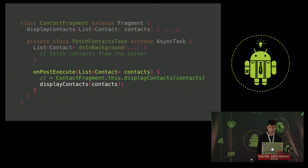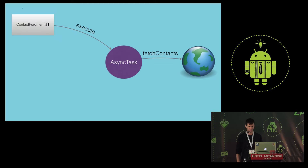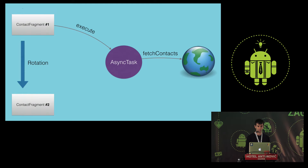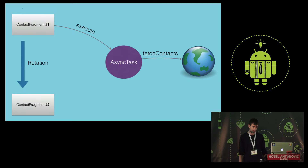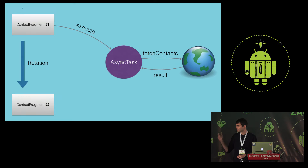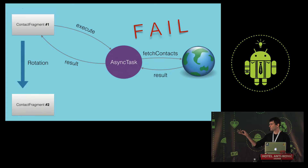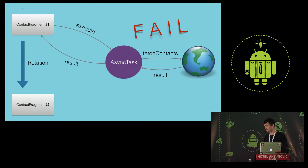What happens if I rotate the device while waiting for the result? The first contactFragment instance runs the AsyncTask. While it's fetching contacts, I rotate — a second contactFragment instance is created. The result comes back to the first fragment, which is no longer displayed and is already being destroyed — it's irrelevant. So async tasks are not rotation friendly.